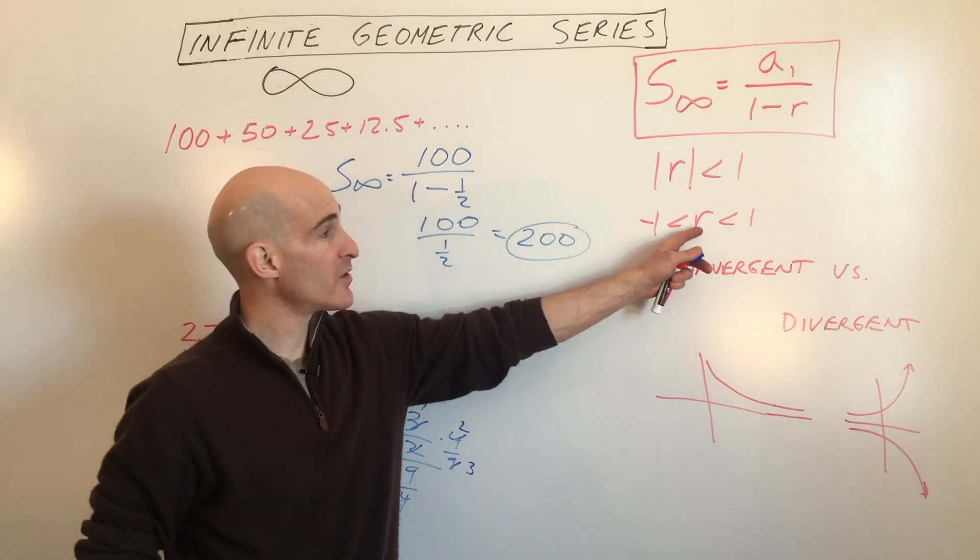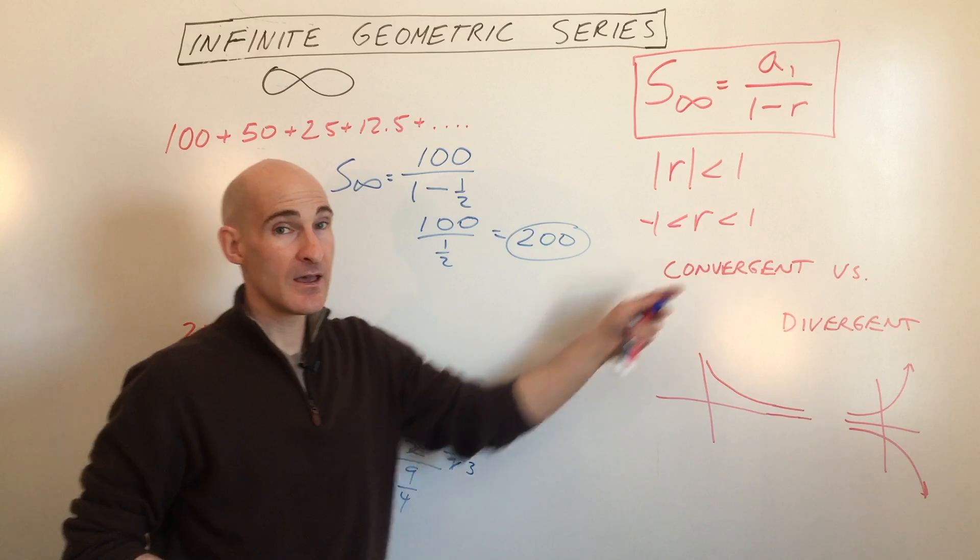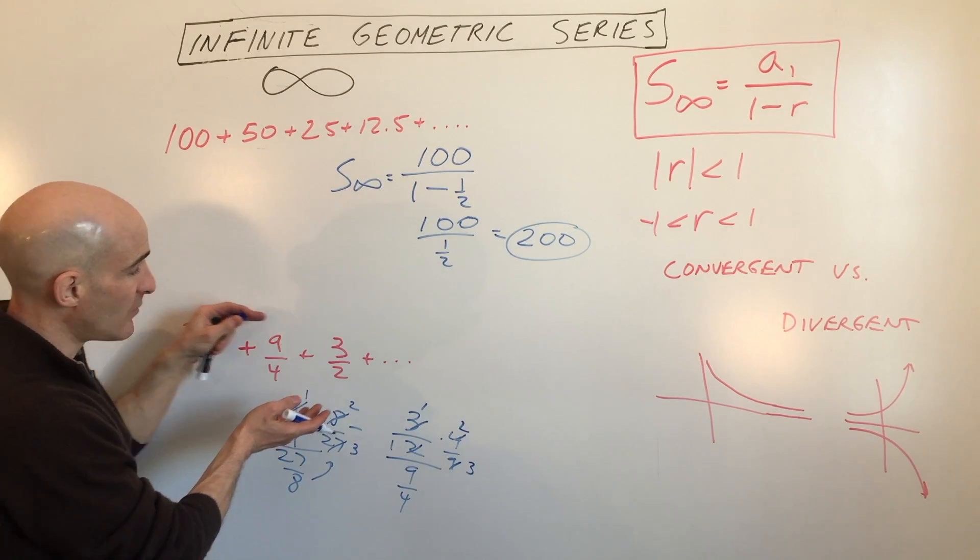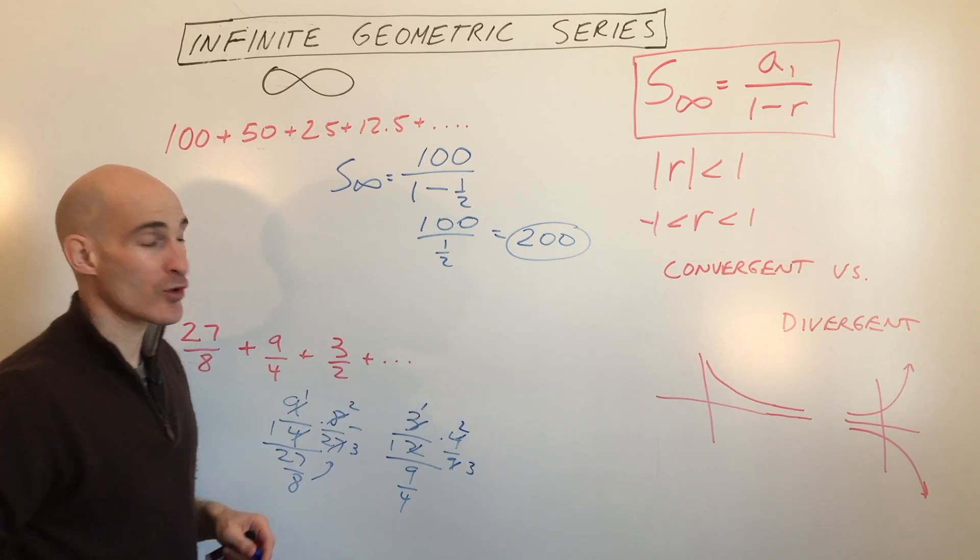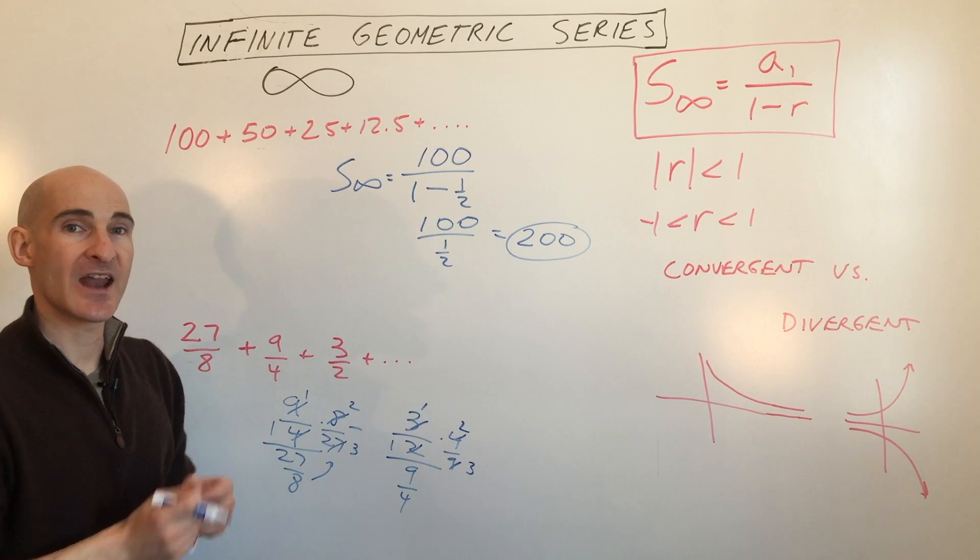And two thirds meets our requirement of being in between negative 1 and 1. That means that this is going to be getting smaller, smaller, smaller. It's going to be approaching zero. And we can add up all the terms.